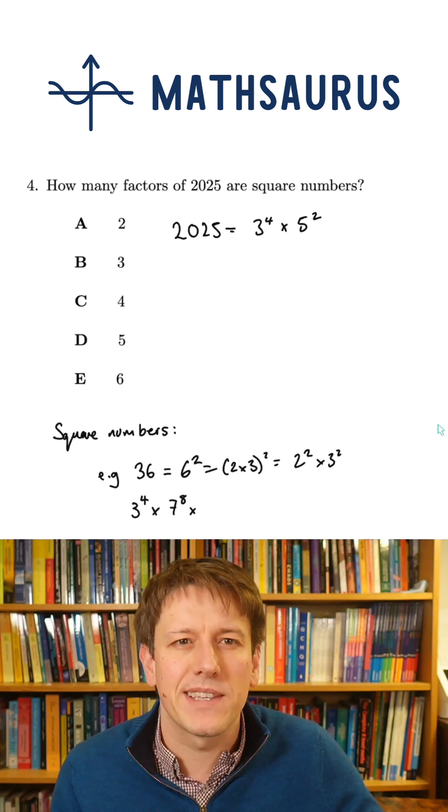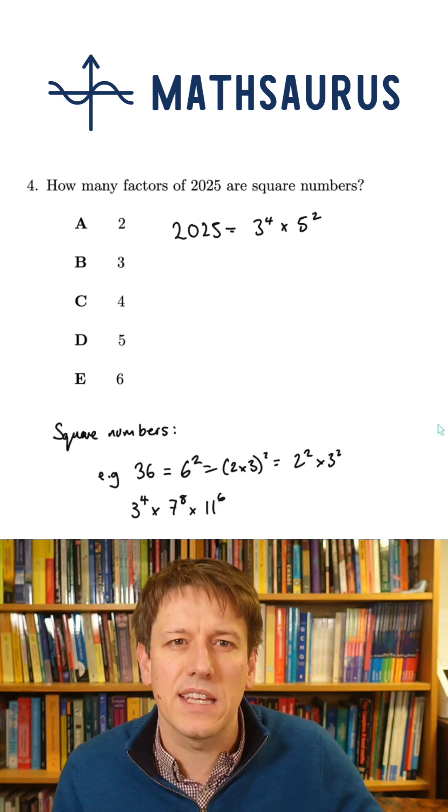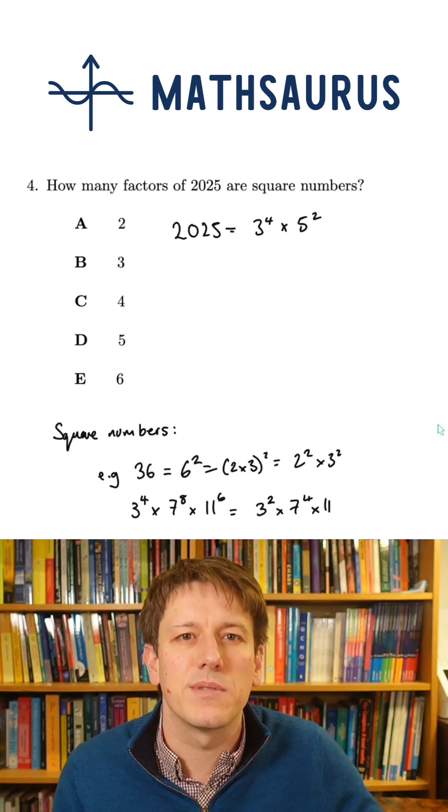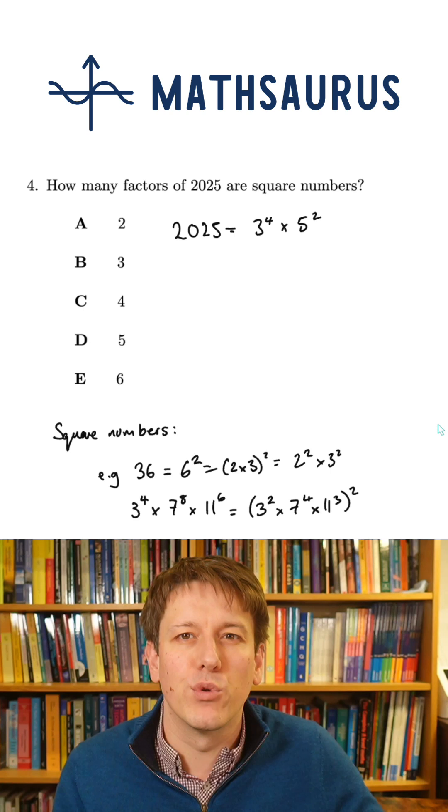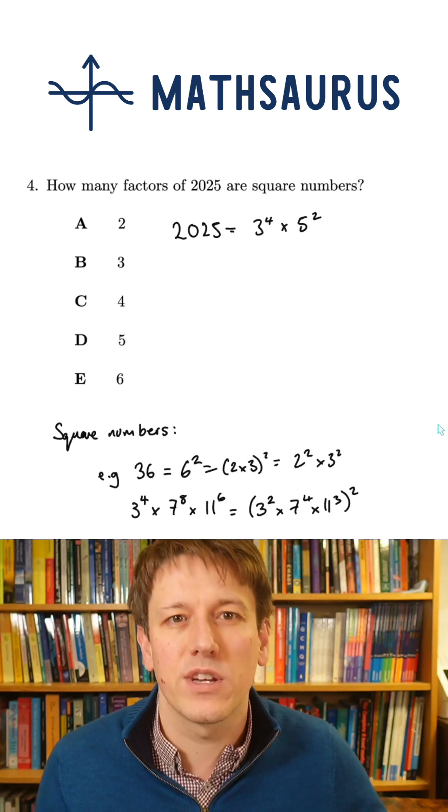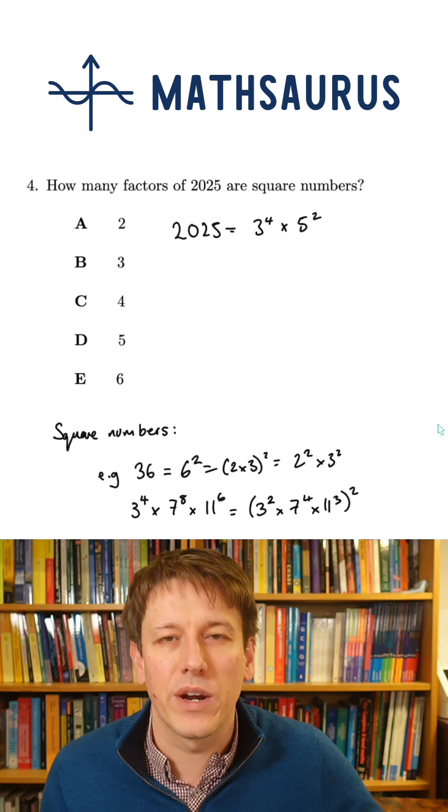I can also make square numbers like this: 3 to the 4 times 7 to the 8 times 11 to the 6 equals 3 squared times 7 to the 4 times 11 cubed, all squared, because of the rules of indices and powers. I'll get 3 to the 2 times 2 times 7 to the 4 times 2 times 11 to the 3 times 2 when I multiply that out.